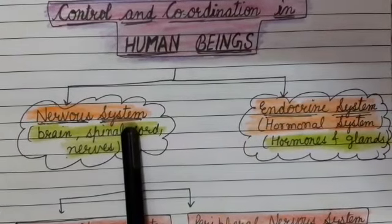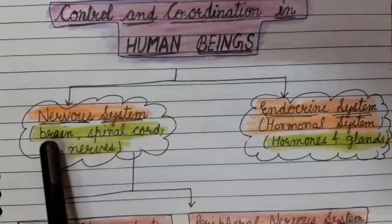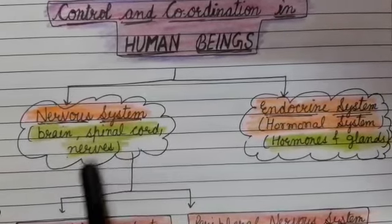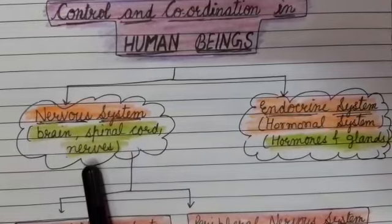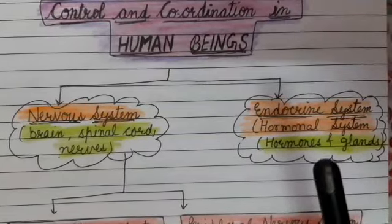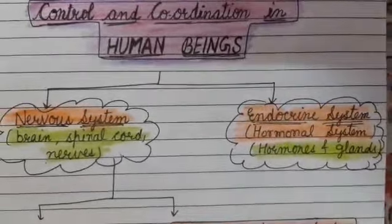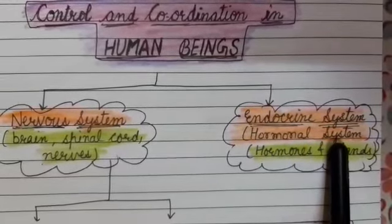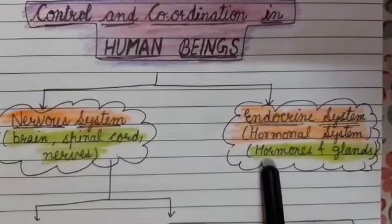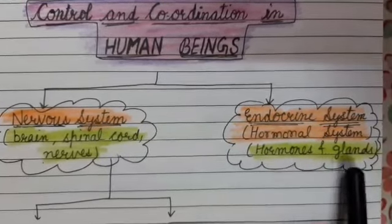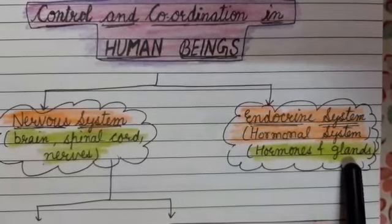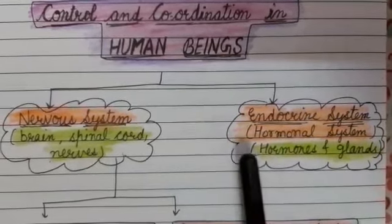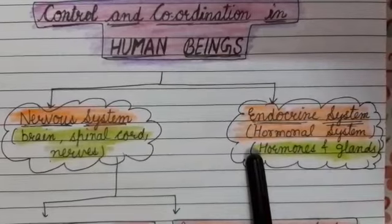The Nervous System consists of Brain, Spinal Cord, and different types of Nerves. The Endocrine System is also called the Hormonal System. It consists of various hormones produced by Glands. We will study both systems turn-wise.